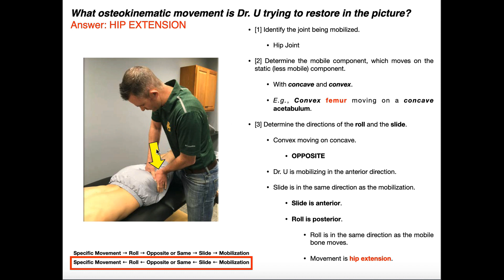In this picture, it looks like Dr. Yu is applying a force on the posterior thigh. The bone in there is going to be the femur, and right above that we would have the hip. So most likely we're talking about the hip joint. Remember the two bones that articulate in the hip joint, the iliofemoral joint: we've got the head of the femur and the acetabulum of the pelvis. We need to figure out which one is concave and which one is convex.